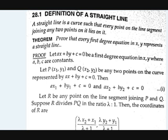A straight line is a curve such that every point on the line segment joining any two points on it lies on that curve too. Means, let there be two points on that curve — if we connect two points and draw a line segment between them, that line segment will be part of that line. In other words, a line segment is a part of a straight line.